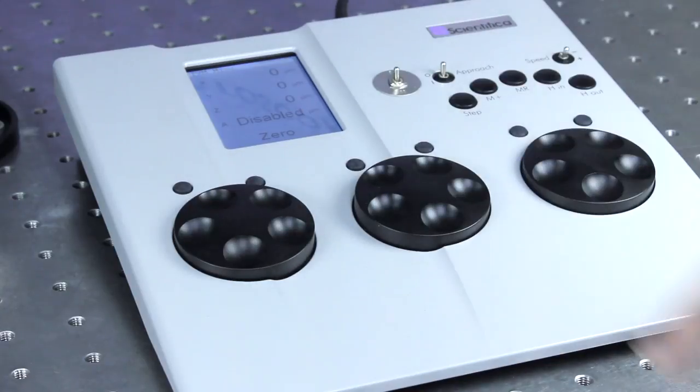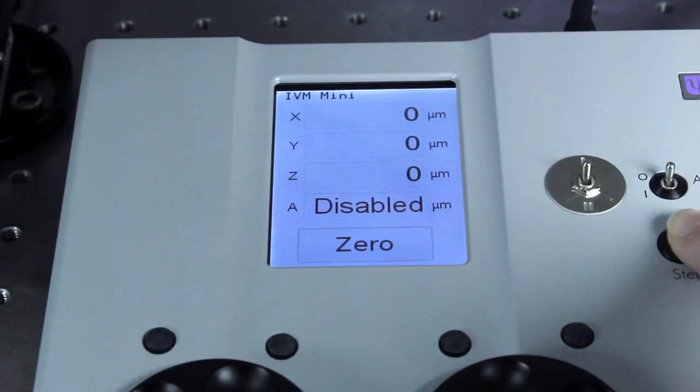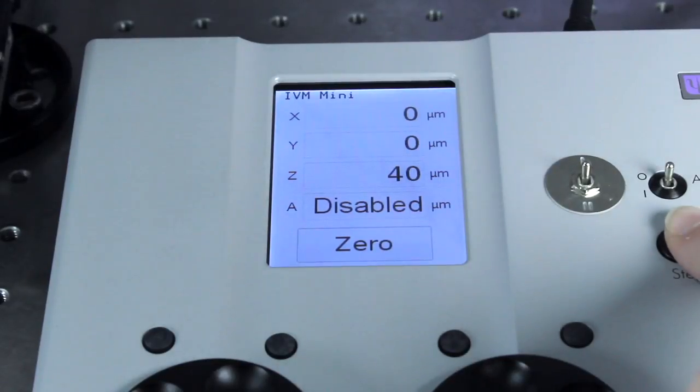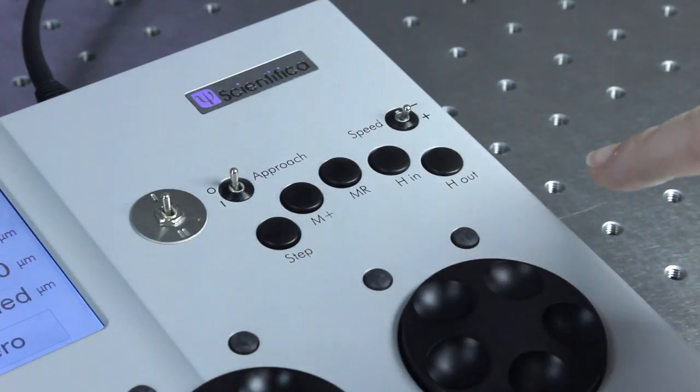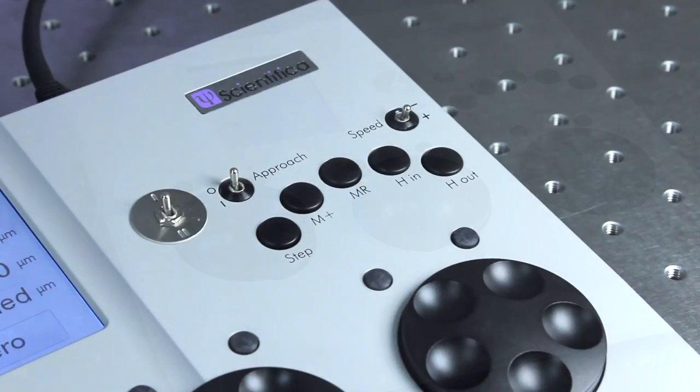You can also zero the display using the touch screen interface. The Patchpad display provides fast access to a variety of functions including activating the approach axis, adjusting speed and setting and recalling memory positions.